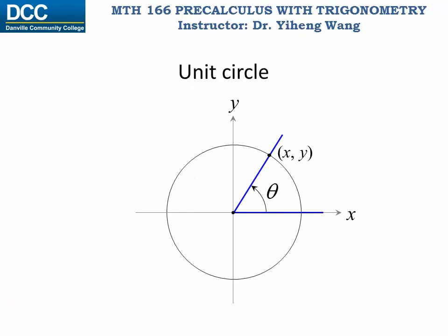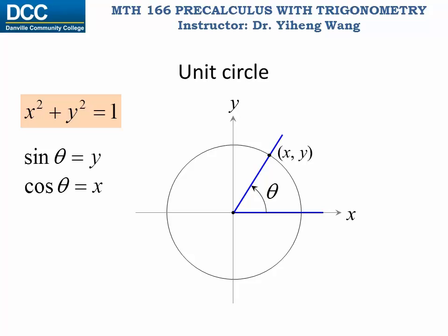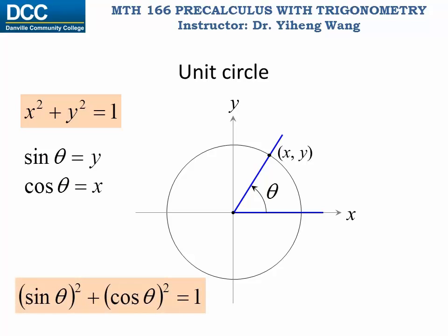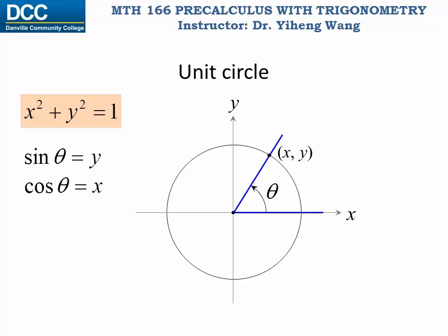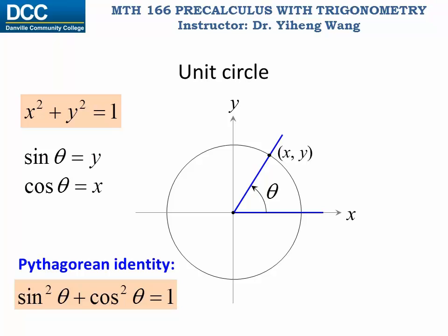Since the point with coordinates x and y is on the unit circle, x squared plus y squared must equal one. And since sine theta equals y and cosine theta equals x, substituting in gives us sine squared theta plus cosine squared theta equals one. This is called the Pythagorean identity, which tells you that for the same angle, its sine value squared plus its cosine value squared must equal one.